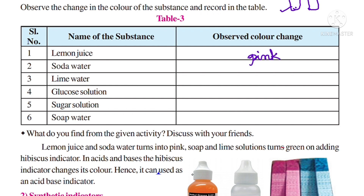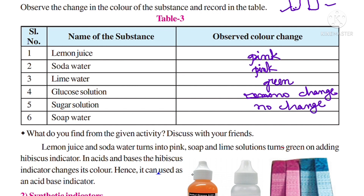The second test tube contains soda water. When hibiscus indicator is added to soda water, it also turns pink because soda water contains acid. Lime water changes to green color. Glucose solution is neutral — it is neither an acid nor a base — so there is no change in color. Sugar solution also shows no change. When hibiscus indicator is added to soap water, it turns green.